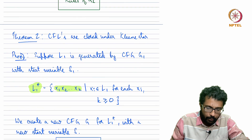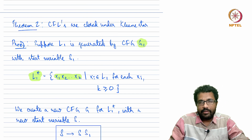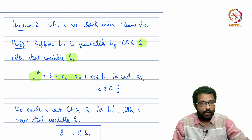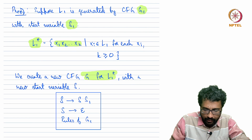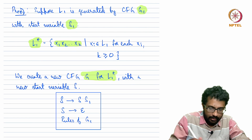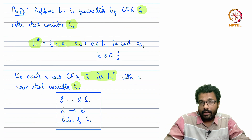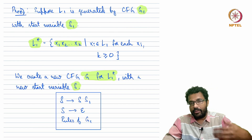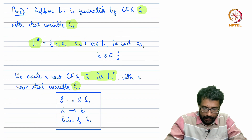Suppose L1 is a context-free language with grammar G1 and start variable S1. We want to build a context-free grammar for L1 star, which we will call G with a new start variable S. We add two new rules along with the rules of G1. The new start variable is S, not S1. The first rule is that S gives S S1.